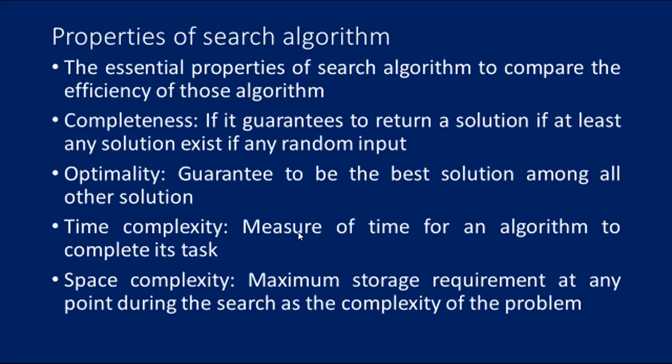Optimality — if a solution found for an algorithm is guaranteed to be the best solution among all other solutions, then such a solution is said to be an optimal solution. Time complexity is a measure of time for an algorithm to complete its task. Space complexity is the maximum storage space required at any point during the search, as a complexity of the problem. These are the main properties of a search algorithm.